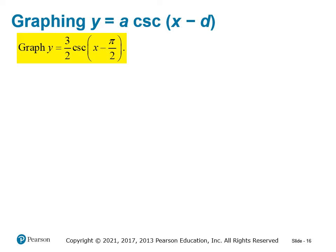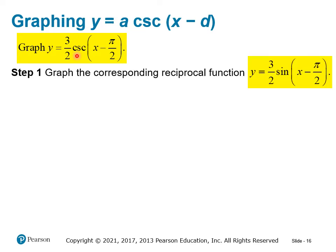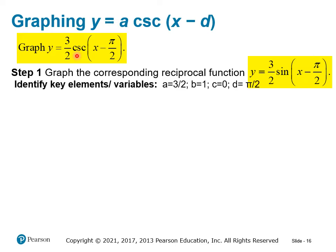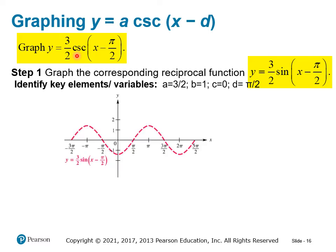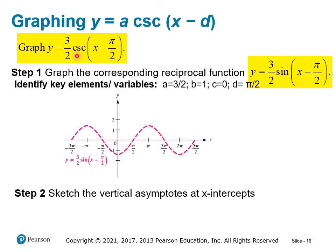Let's try another one. These are pretty straightforward if you're good at graphing sine and cosine. Since we're graphing the cosecant function here, our reciprocal function is the sine function. Again, we look for the key elements A, B, C, and D — amplitude, period, vertical shift, and phase shift. Here's the graph of the sine function corresponding to this cosecant function. The next step is to sketch our vertical asymptotes wherever the sine function crosses the x-axis.